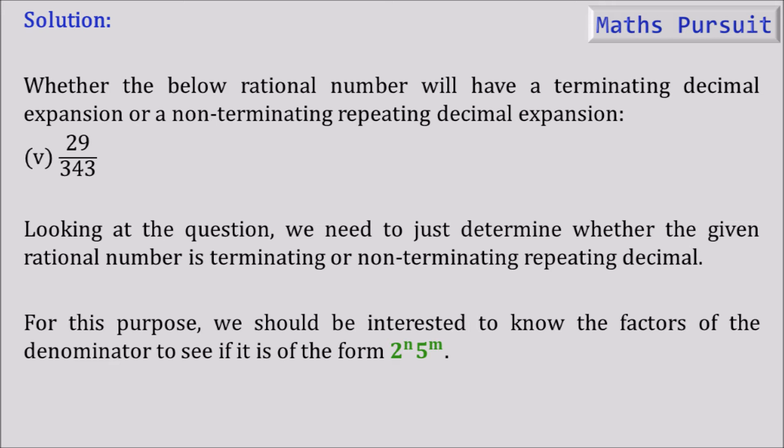Let's now move into the further steps. Let's find the factors of the denominator, that is 343. Now factorizing 343, we could see that 7 is the least prime number with which 343 is divisible. After dividing 343 by 7, we get 49, and again dividing 49 by 7, we get 7. Now 7 is divisible by 7 itself and we get 1. So here our factorization stops.